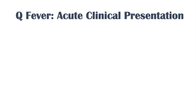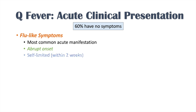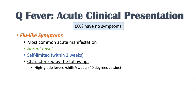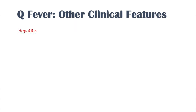Around 60% of individuals who are infected are asymptomatic. The other 40% can get flu-like symptoms, which are the most common acute manifestation — an abrupt onset, self-limited infection lasting around 2 weeks. It is characterized by high-grade fevers with chills and sweats, usually around 40 degrees Celsius, lasting 1 to 3 weeks. Fatigue is a very common complaint, along with myalgia (muscle aches and cramps), and very severe headaches with associated photophobia.